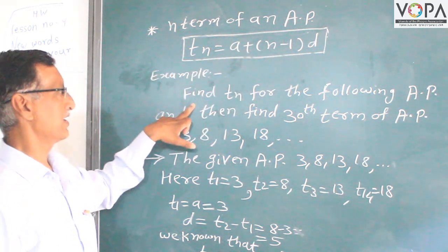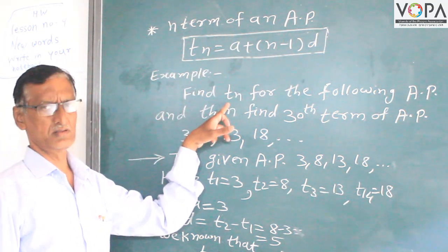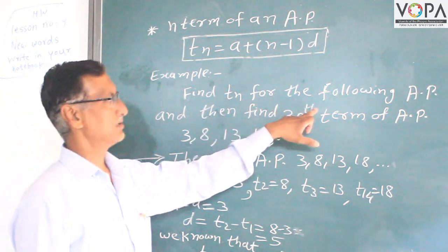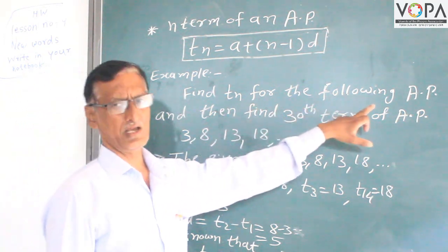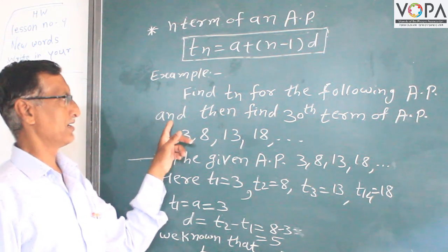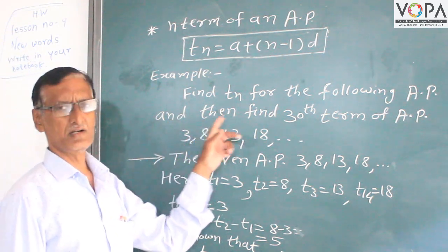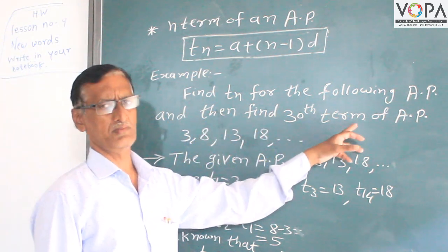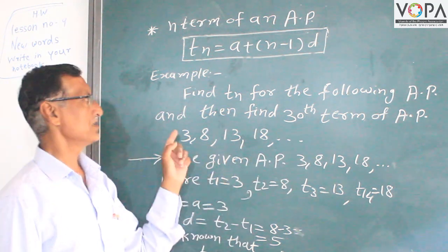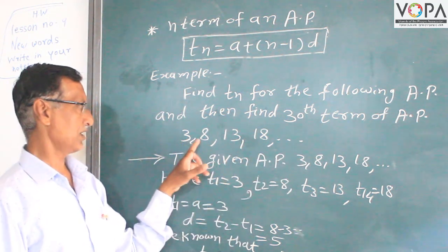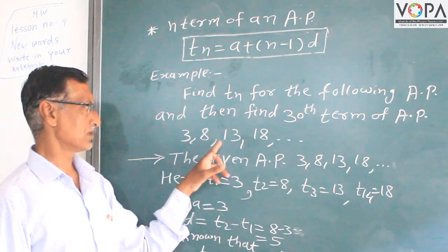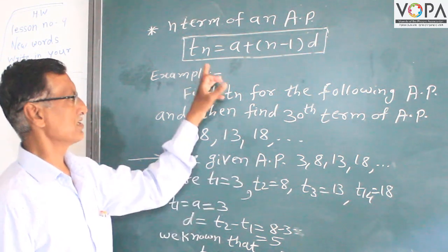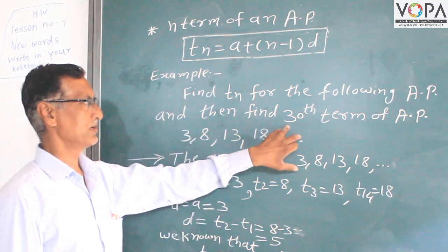For example, find the nth term for the following AP and then find the 30th term of the AP. The sequence given is 3, 8, 13, and 18. This formula is used to calculate the 30th term of the AP.